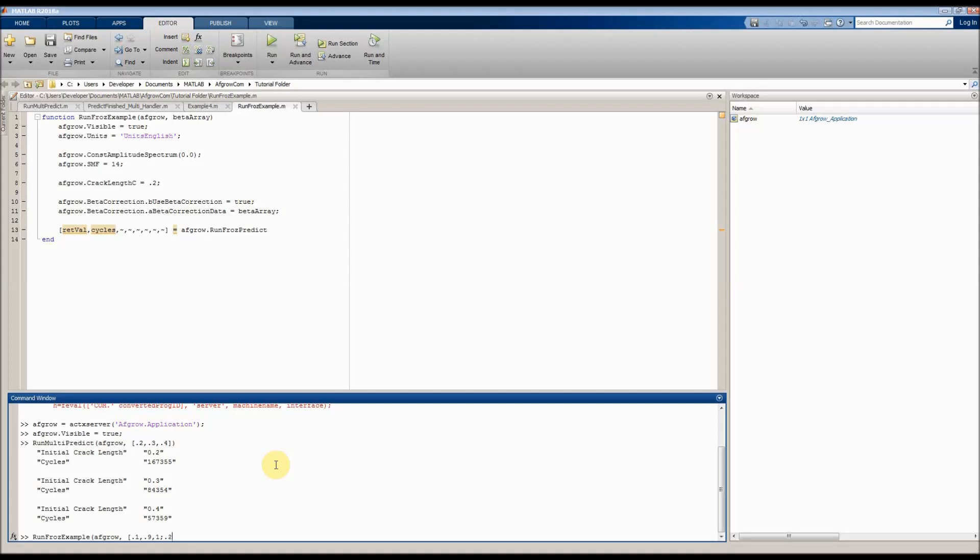We'll say 0.1, and then 0.9, and then the final column has to be 1 for all of them because this is a through crack. So 1, and then we'll say 0.2, 0.8, 1, and that should be sufficient for our example. So then we'll run that, and there we have it. It returned 0, which means it was a successful execution, and it says that the lifetime prediction was 79,248 cycles. So that's it for this example.